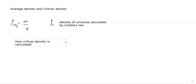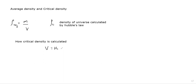To calculate critical density, we use Hubble's law: V equals H-naught times D, meaning the recession speed equals the Hubble constant multiplied by distance. So V equals H-naught times D.